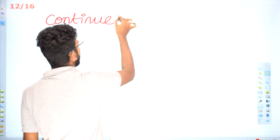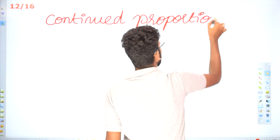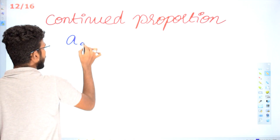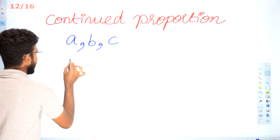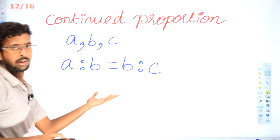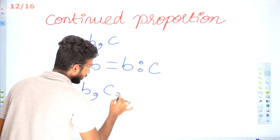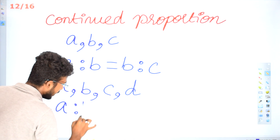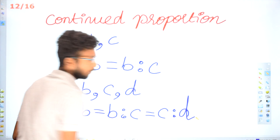Continued proportion — continued proportion is what we call when A, B, C are in continued proportion, which is nothing but A ratio B is equal to B ratio C. And for four terms A, B, C, D in continued proportion: A ratio B is equal to B ratio C is equal to C ratio D.